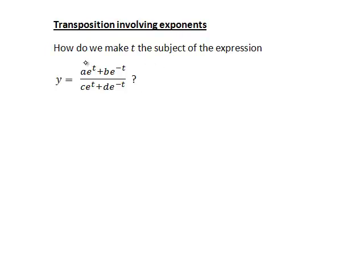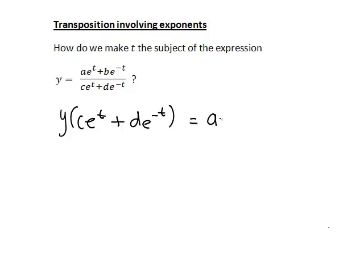The first thing to notice is that we have one expression involving t divided by another expression involving t. So if we want to get t on its own, the first step is to cancel that denominator from the right hand side, as that will make it simpler to manipulate. That is, we multiply both sides by ce^t plus de^(-t), and doing that gives us y times ce^t plus de^(-t) on the left, and cancels it from the right, leaving ae^t plus be^(-t) on the right.